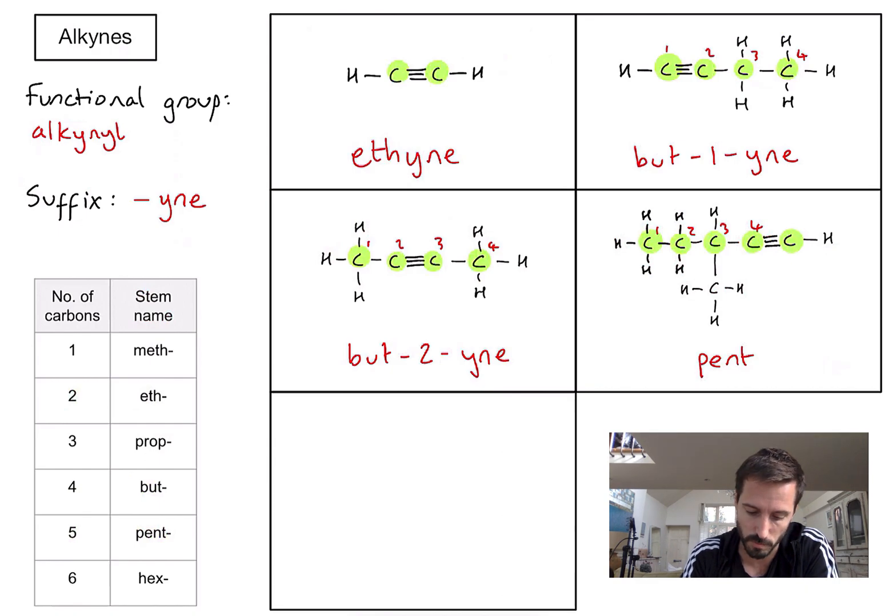whenever we find a functional group in a molecule, we always want to number our carbons so that that functional group is as close to the beginning as possible. So in this case, I'm going to label from right to left, which indicates now that my triple bond begins on the first carbon. So I'm going to have pent-1-yne.